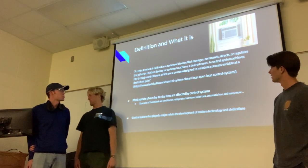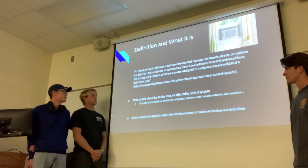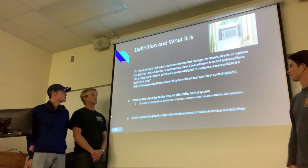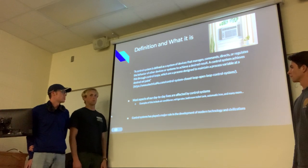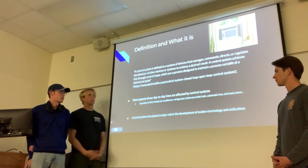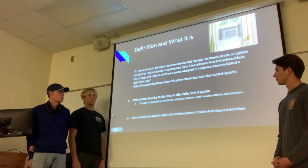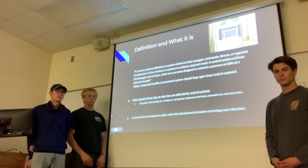The definition of a control system is a system of devices that manages, commands, directs, or regulates the behavior of other devices or systems to achieve a desired result. A control system achieves this through control loops, which are a process designed to maintain a process variable at a desired set point. Most aspects of our day-to-day lives are affected by control systems. A few examples include air conditioner, refrigerator, bathroom toilet tank, automatic iron, and there's so many more. Control systems have played a major role in the development of modern technology and civilizations.